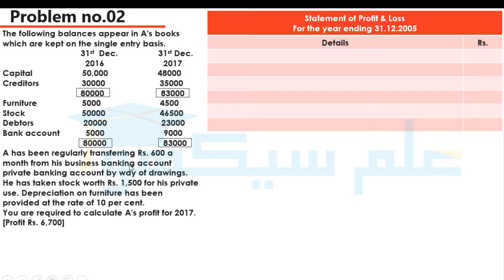A has been regularly transferring Rs. 600 a month from his business banking account to his private banking account by way of drawings. He has taken stock worth Rs. 1,500 for his private use. At the rate of 10%, and the furniture is also at 10%. You are required to calculate A's profit for 2017.